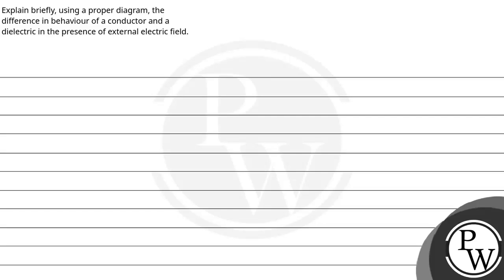Hello Bacho, let's read this question. The question says: explain briefly using a proper diagram the difference in behavior of a conductor and a dielectric in the presence of external electric field. Key concept: dielectric.